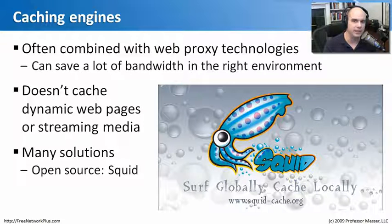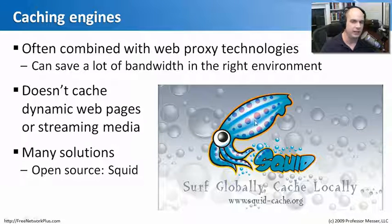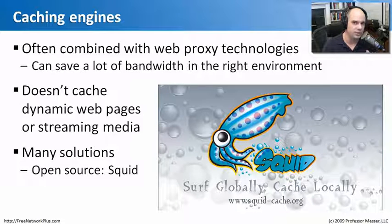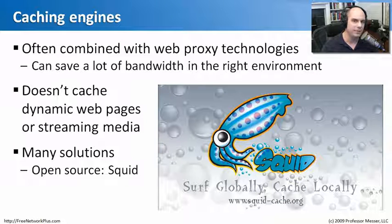A very common open source cache is one called Squid, often combined with a proxy service. The problem with any type of caching is that it won't cache dynamic web pages or streaming media — there's just no way to cache those. Squid is a good example of using an open source solution for bandwidth management and network efficiency, saving time, money, and making the network more available to the applications that really need it.